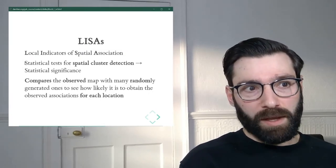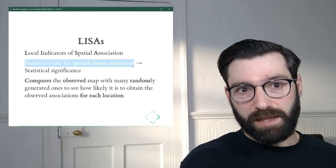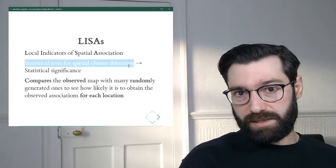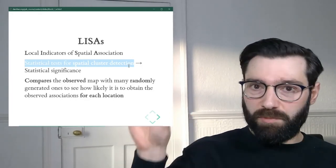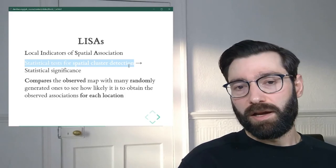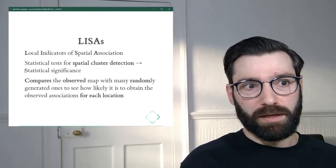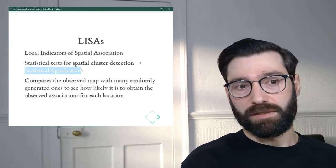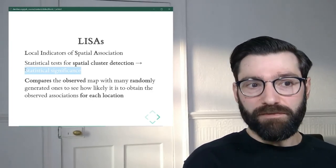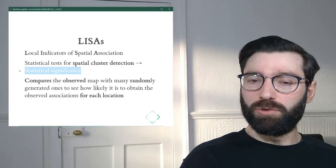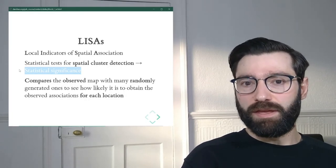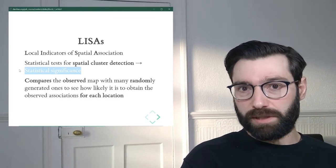However, the one that we're going to see in this course is the local version of Moran's I. So LISAs are statistical tests to detect spatial clusters, or sections of the map with particular patterns, and where we can also get a statistical significance through inference. And the inference is going to be very similar to how we would perform inference in the global case.